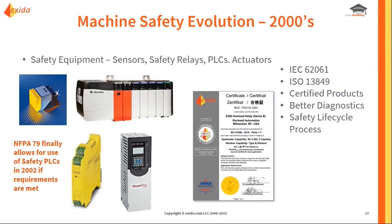In the 2000s, we're really starting to get more of our modern traditional machine safety certified equipment — certified sensors, safety relays, safety PLCs, actuators, safety contactors — that have been formally reviewed and certified. IEC 62061 and ISO 13849 come into use, we're getting better diagnostics, and we're seeing an overall safety lifecycle process. For the first time in 2002, NFPA 79 does allow for safety PLCs to be used if specific requirements are met. So we finally get into more of the modern day approach where safety PLCs are much more commonly used and adopted.